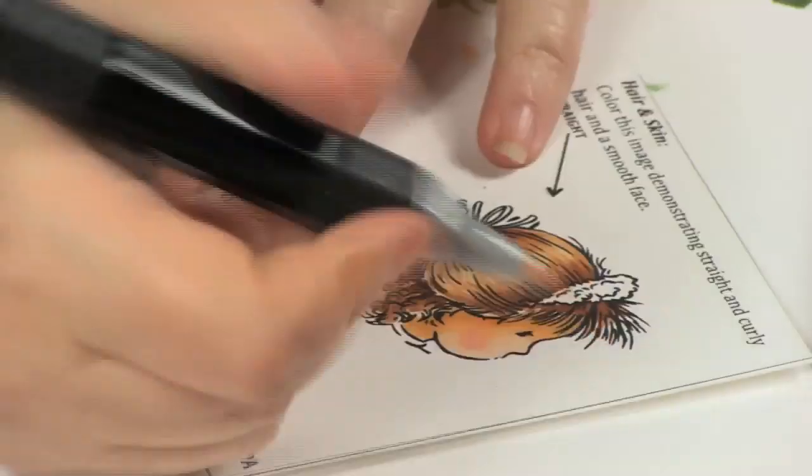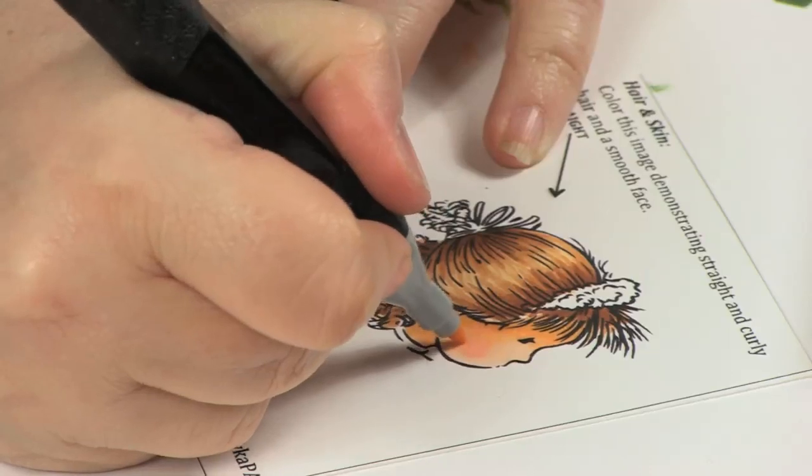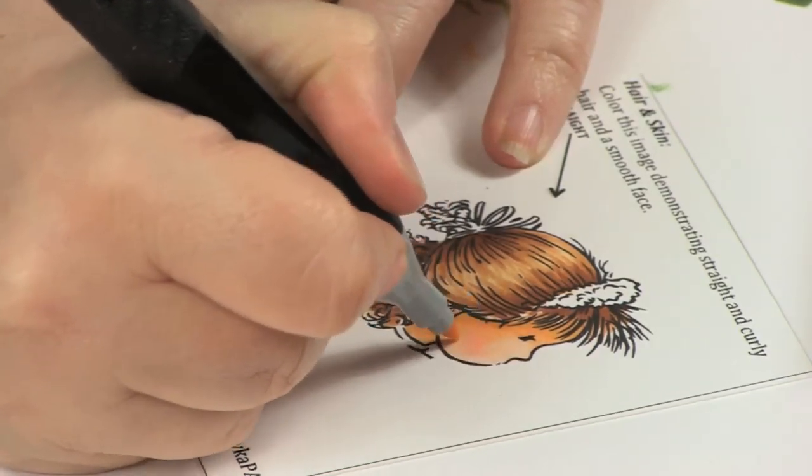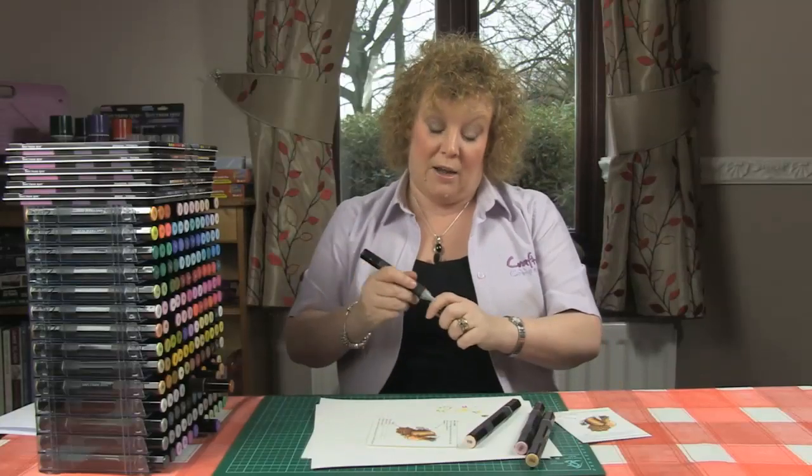Then we would do exactly the same with FS2 into the lighter areas. That will blend that round to give her a lovely rosy glow to her cheek and smooth that line out.